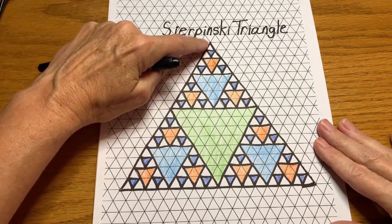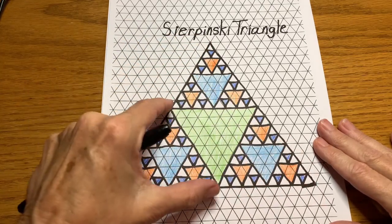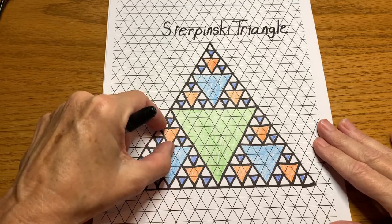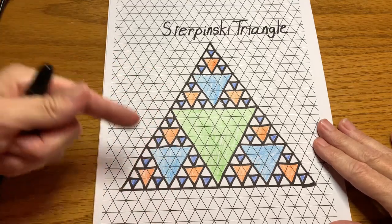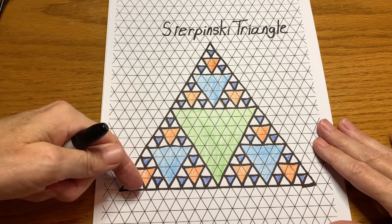So for this example, we have a 16 by 16 triangle and then an 8 by 8, 4 by 4, 2 by 2. So each iteration or each step is half the size of the first one.